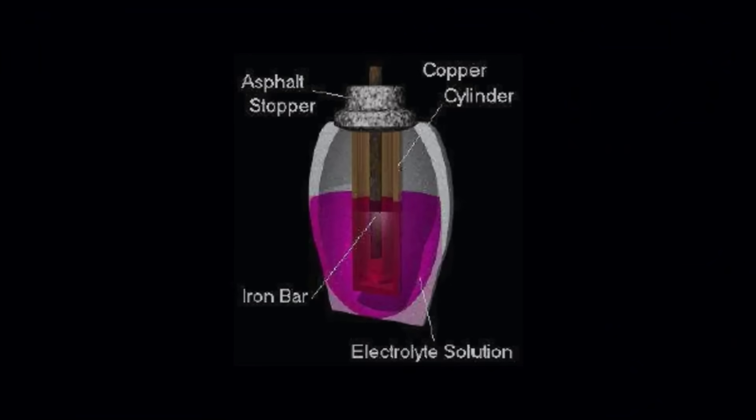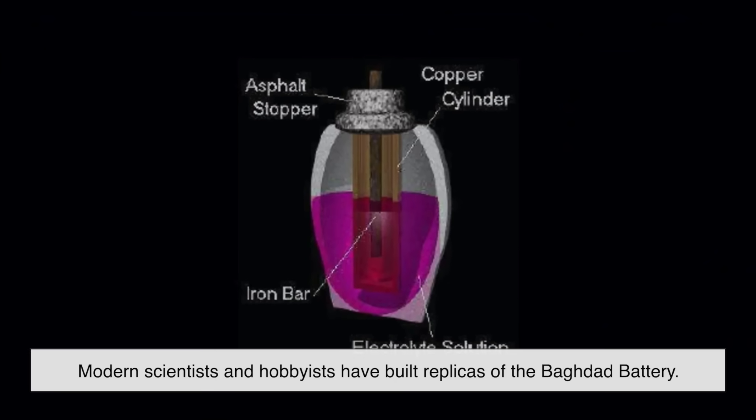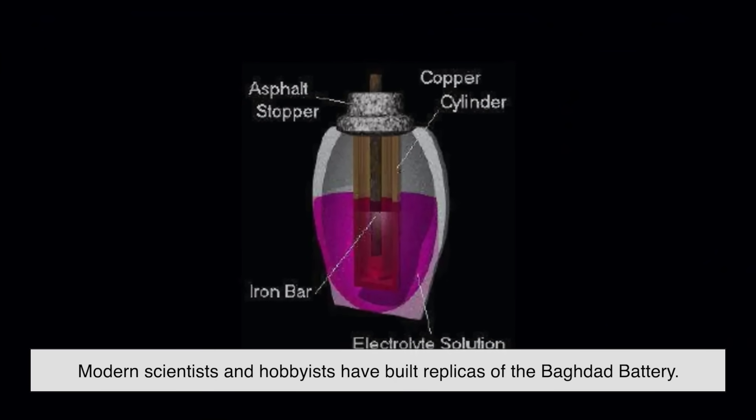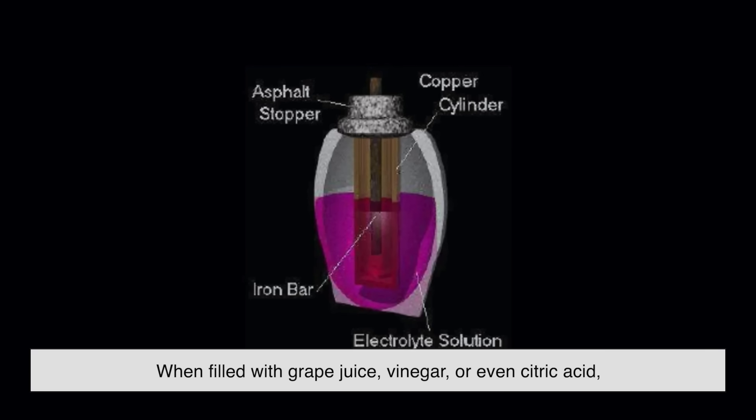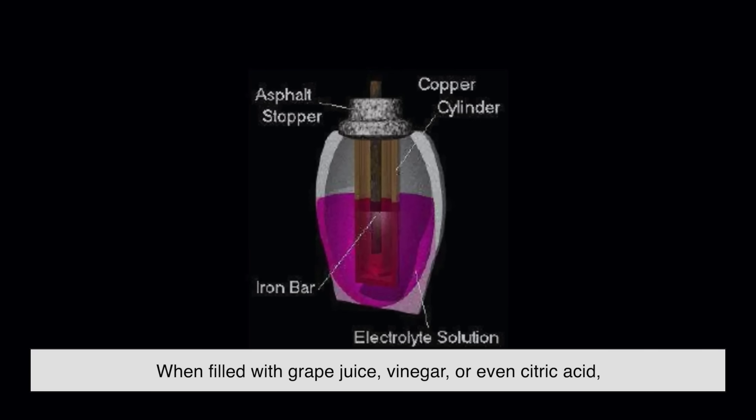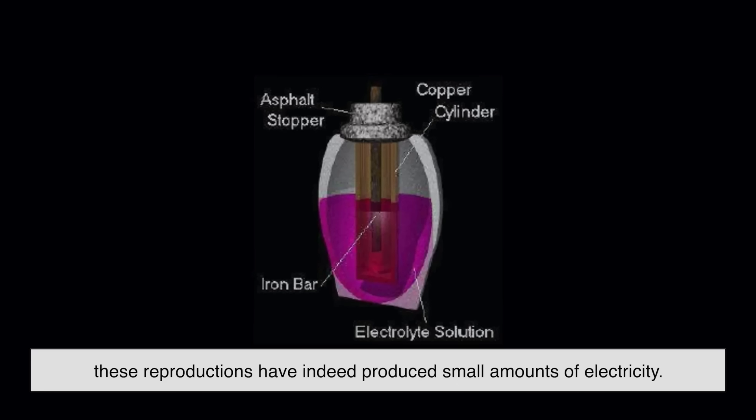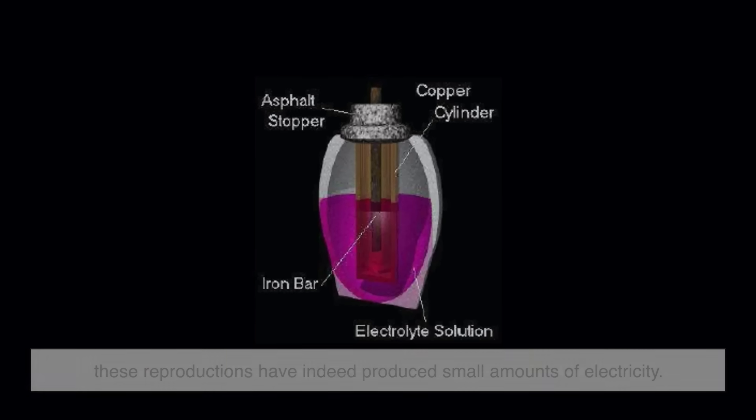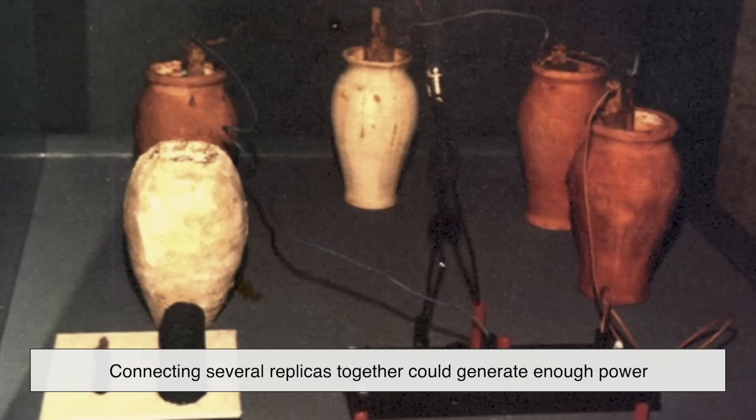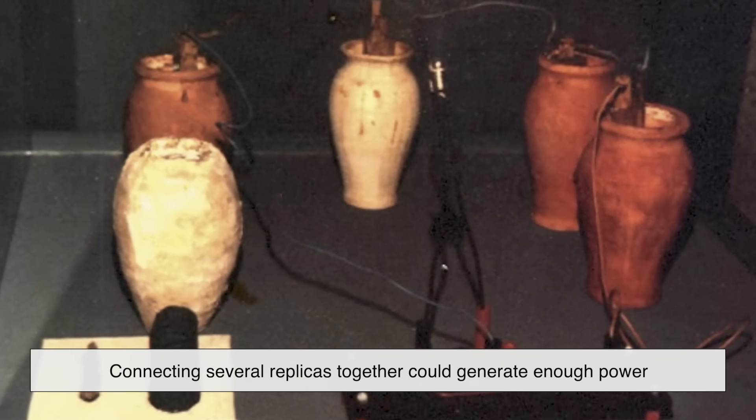To test Koenig's theory, modern scientists and hobbyists have built replicas of the Baghdad battery. When filled with grape juice, vinegar, or even citric acid, these reproductions have indeed produced small amounts of electricity.